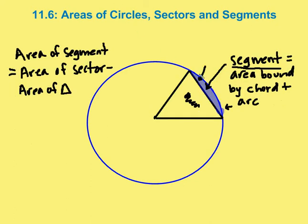A segment is a little bit different than a sector. It's just the area bound by a chord — this outside piece here in blue — and its corresponding arc. The area of the segment is equal to the area of the sector minus the area of the triangle inside. Let's talk about a couple problems using the formulas we've learned for areas of sectors and segments.